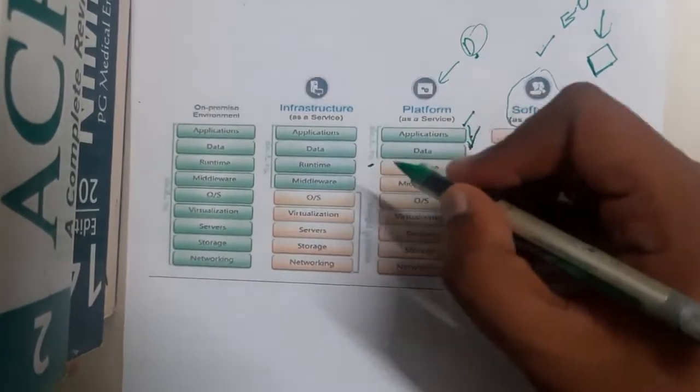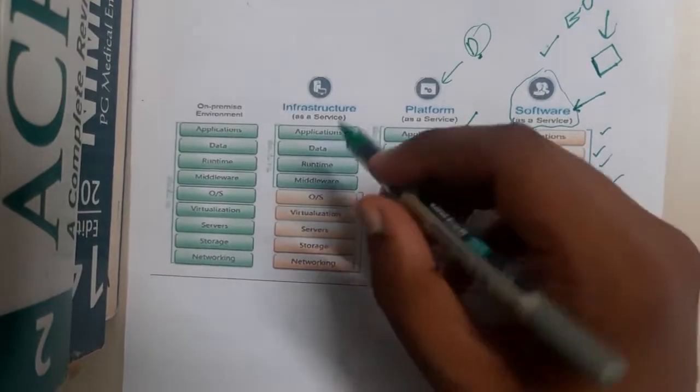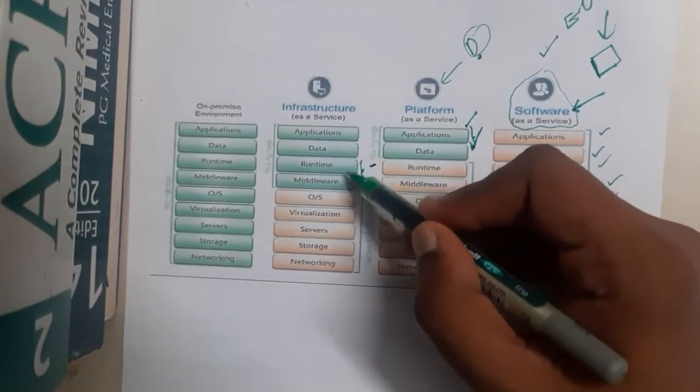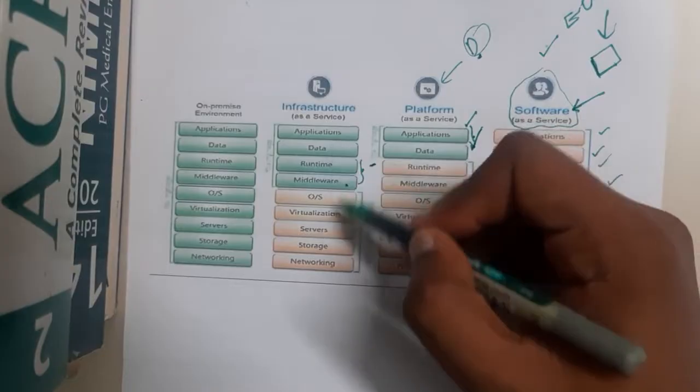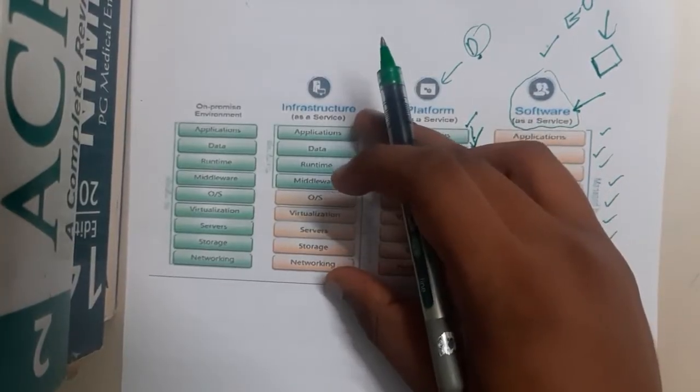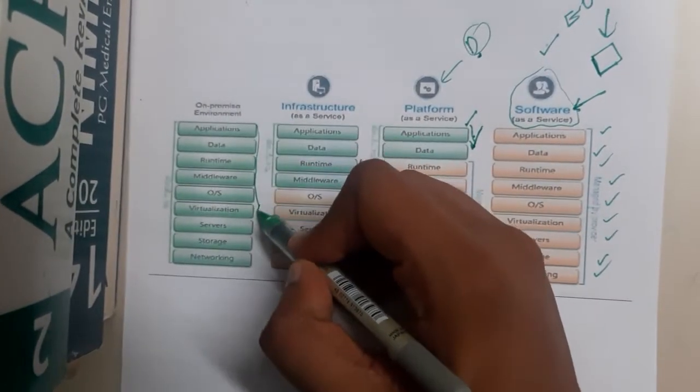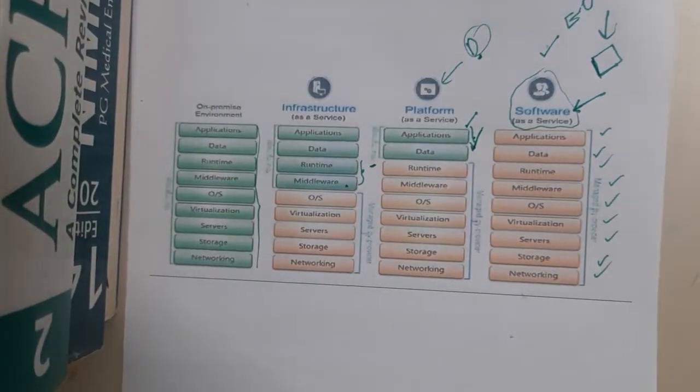In infrastructure as a service, you'll be controlling runtime environments and similar things. That is why two more layers have been given to you, like runtime and middleware. On-premises means everything is given to you - you can do any kind of modification.